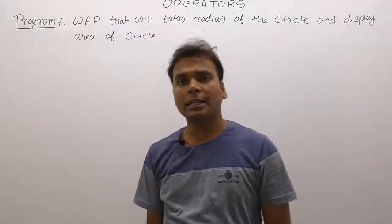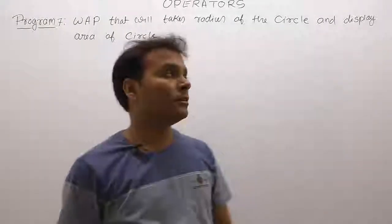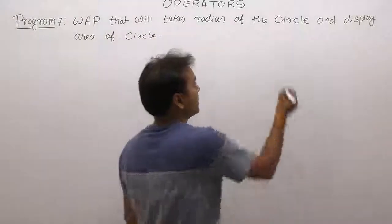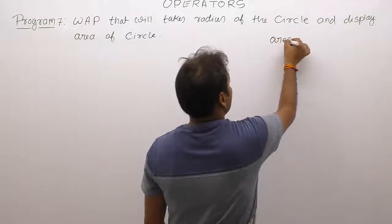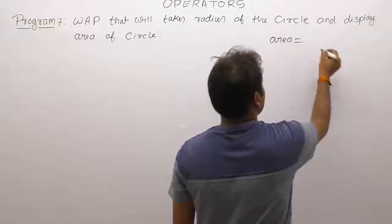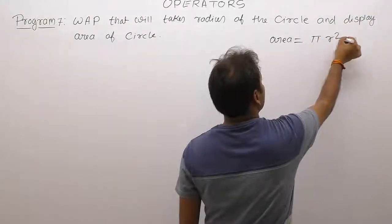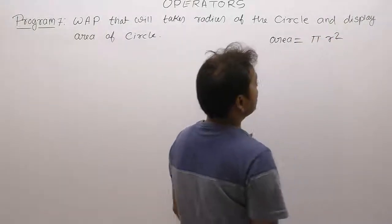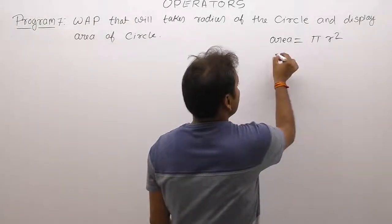Next one: displaying area of the circle, or how to calculate area of the circle. The formula for area of the circle, as we well know, area equals to pi r square. How to represent this expression in C syntax according to the syntax of C?